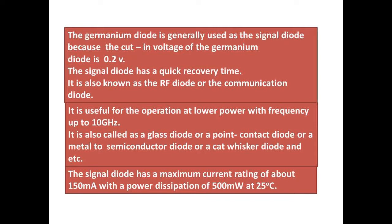The signal diode has a maximum current rating of about 150 mA with a power dissipation of 500 mW at 25 degrees Celsius.